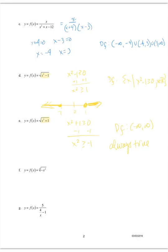In the next example, the root index is 3, which is odd, so it's acceptable to have a negative value inside the radicand. When is this function going to be undefined? Never. The domain of this function is all real numbers.